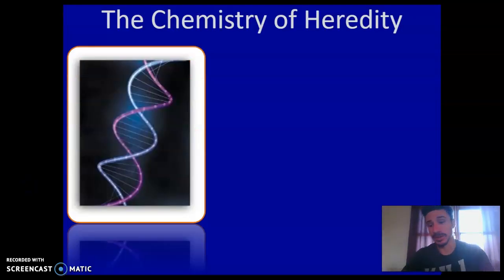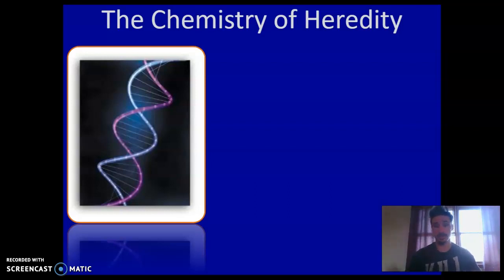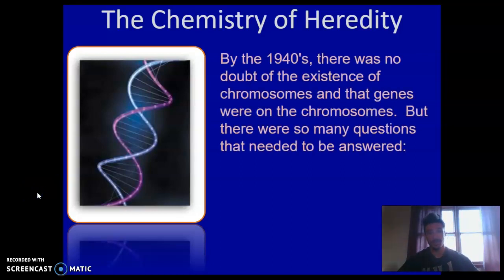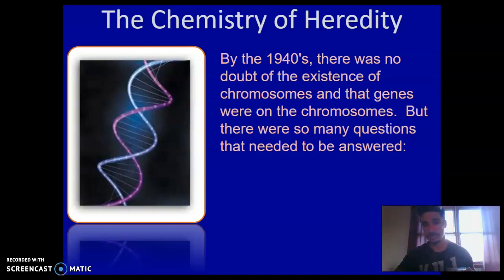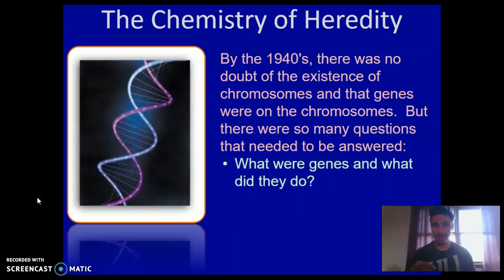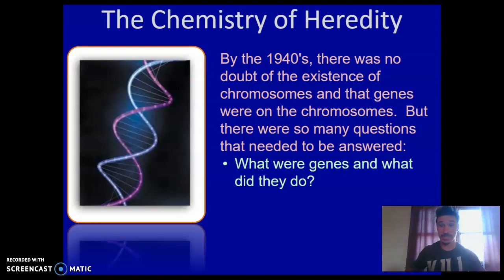First off, we have to look at the chemistry of heredity. We're going to look at the actual molecule that transfers heritable characteristics from parent to offspring. And that molecule, as we know, is DNA. But we didn't always know that. There was no doubt by the 1940s of the existence of chromosomes and that genes existed within these chromosomes. But there were many questions we still didn't have answers to — for instance, we didn't actually know what genes were, how they worked, or how we went from a chemical to a physically expressed trait.